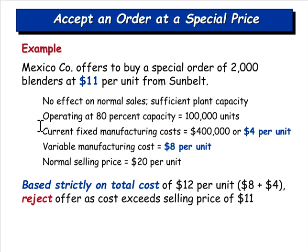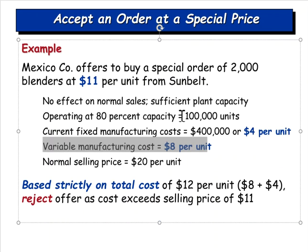Here's an example: Mexico Company offers to buy a special order of 2,000 blenders at $11 per unit from Sunbelt. There's no effect on normal sales and sufficient plant capacity — they're operating at 80% capacity. Current fixed manufacturing costs are $400,000, or $4 per unit; variable manufacturing costs are $8 per unit; normal selling price is $20 per unit. Normally you'd say it costs $12 per unit so you wouldn't accept $11 — but the fixed costs are already covered by the other 80,000 units being produced.